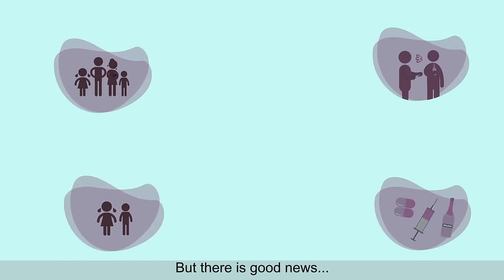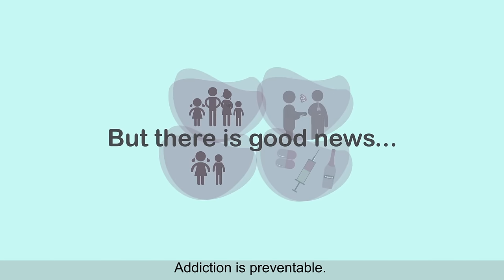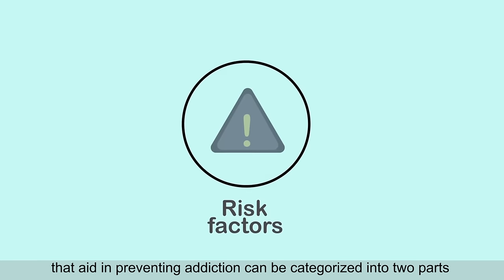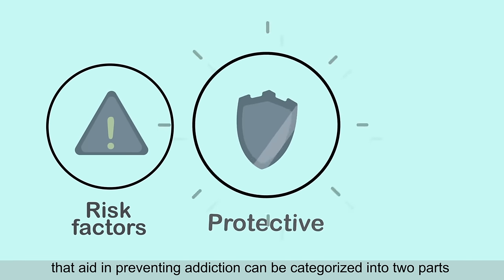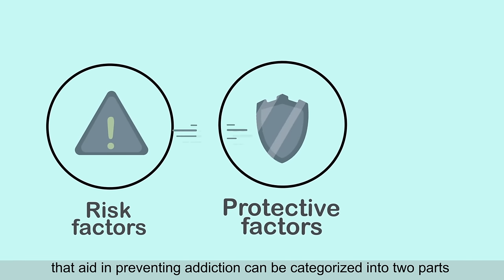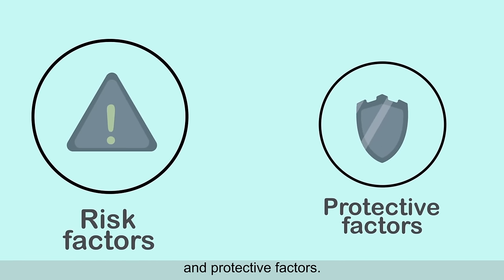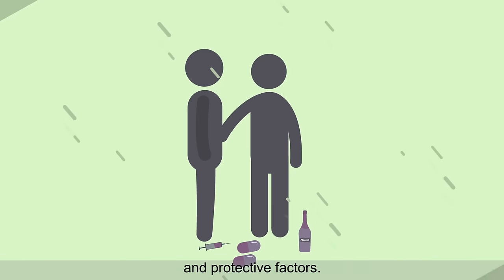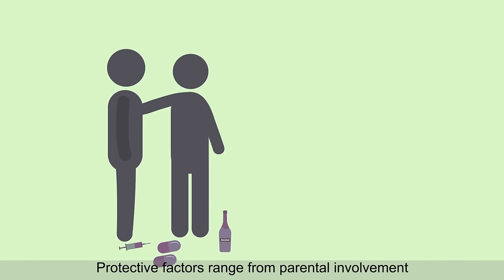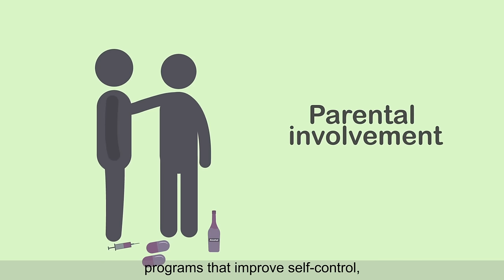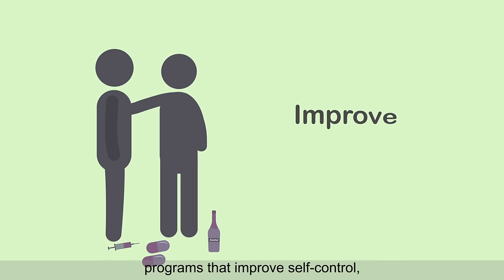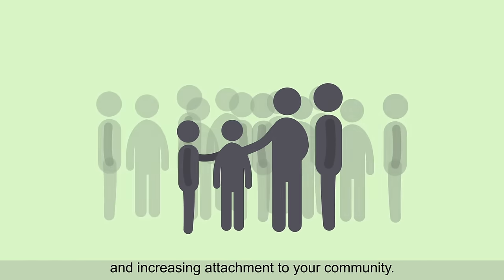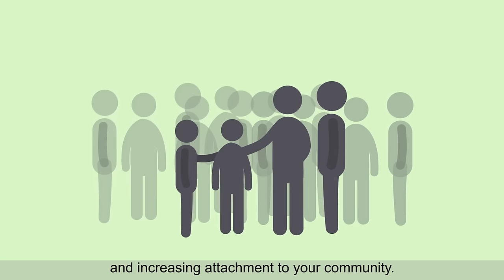But there is good news. Addiction is preventable. Key factors that aid in preventing addiction can be categorized into two parts: risk factors and protective factors. Protective factors range from parental involvement, programs that improve self-control, limiting availability, and increasing attachment to your community.